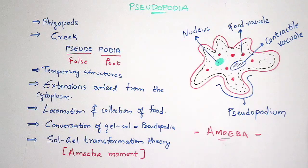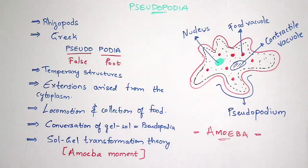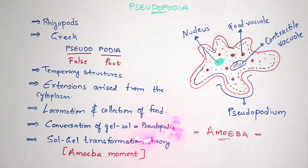Coming to the functions: locomotion and collection of food. Pseudopodia helps in locomotion — locomotion is nothing but movement. With the help of Pseudopodia, the organism can move. They can also collect food with the help of Pseudopodia. For example, in the human being's case, our legs mainly help in movement. Similarly, in the case of Rhizopoda, with the help of Pseudopodia the organism undergoes locomotion and collection of food.